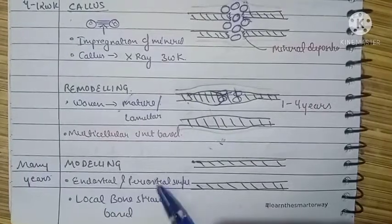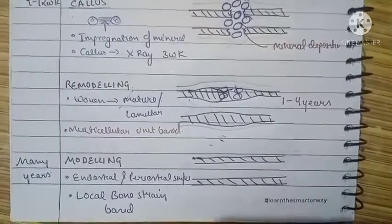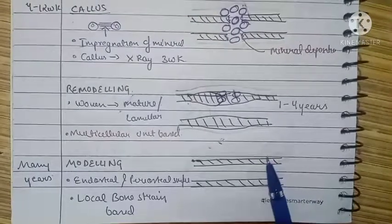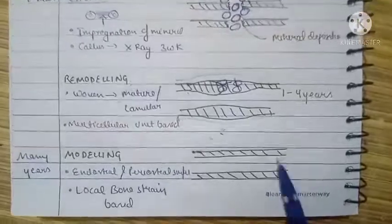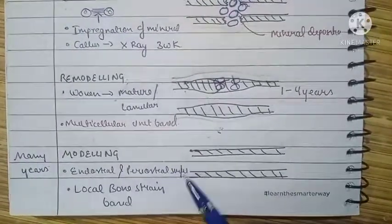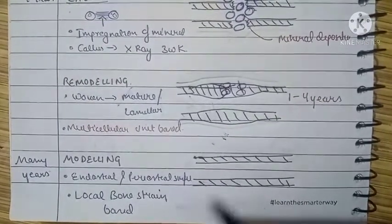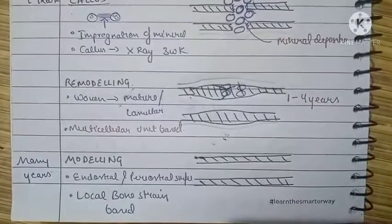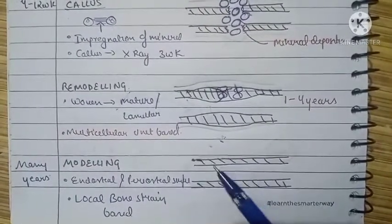During the stage of modeling, which can last for nearly four years, we have endosteal and periosteal surfaces becoming symmetric to the non-fractured part. We cannot differentiate between fractured and non-fractured parts after this. This occurs because of local bone strains which occur when the patient starts walking or putting stress on the bone.